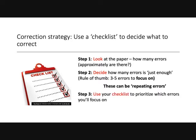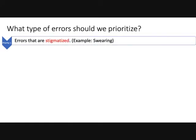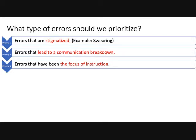Step three is to use the checklist to prioritize which errors you'll focus on. The first priority is errors that are stigmatized. A lot of second language or foreign language students don't understand that things like the F word that they hear all the time in movies are not acceptable for writing in student papers for their teacher. The next priority is errors that lead to a communication breakdown — things that really stop them from being able to send their message, which is the goal of communication. The next priority is errors that have been the focus of instruction; if this is one you've really been working on, that's what you should be focusing on correcting first.